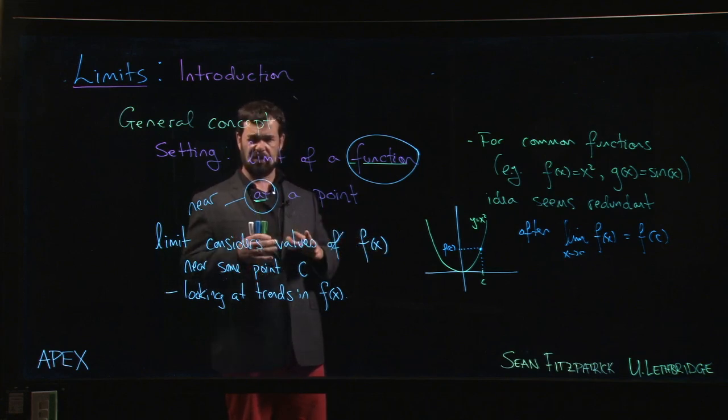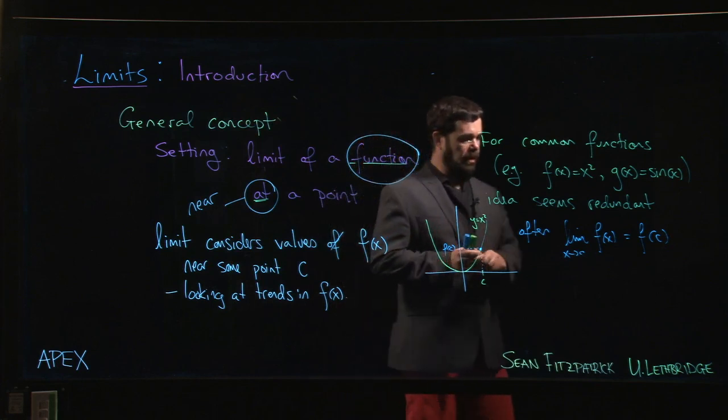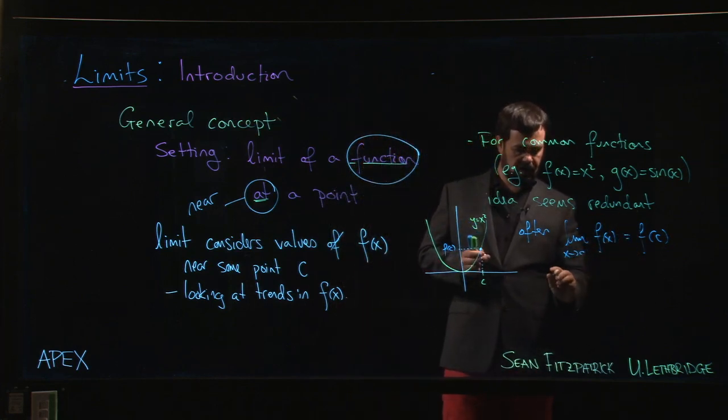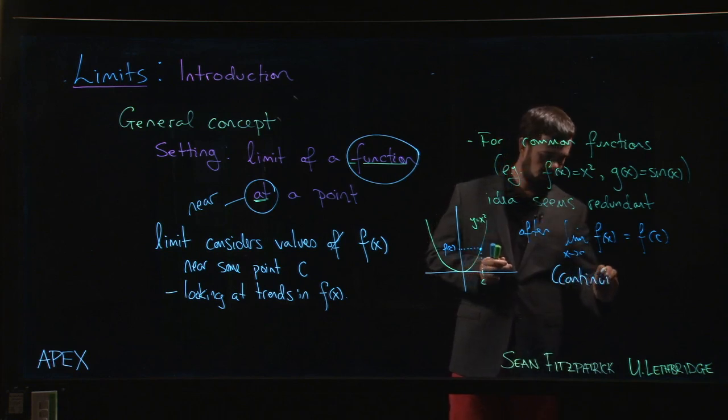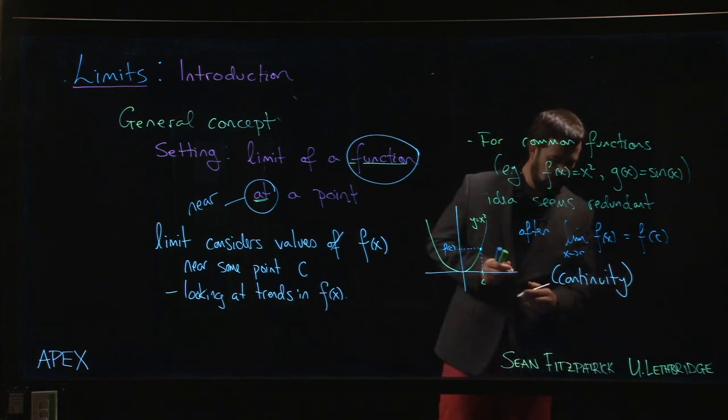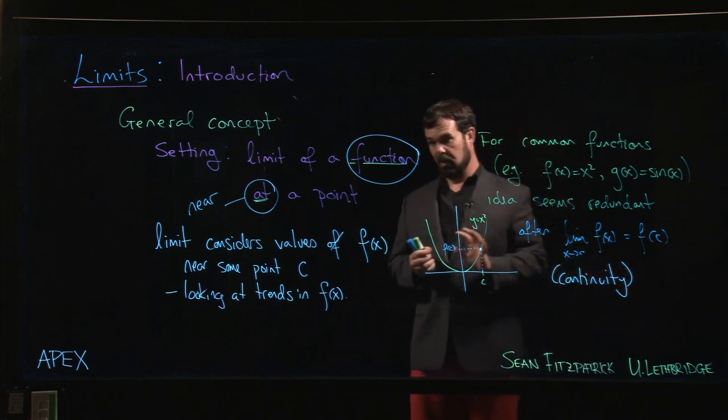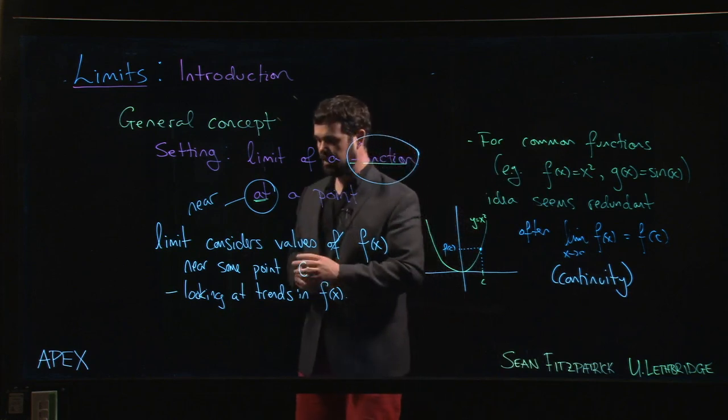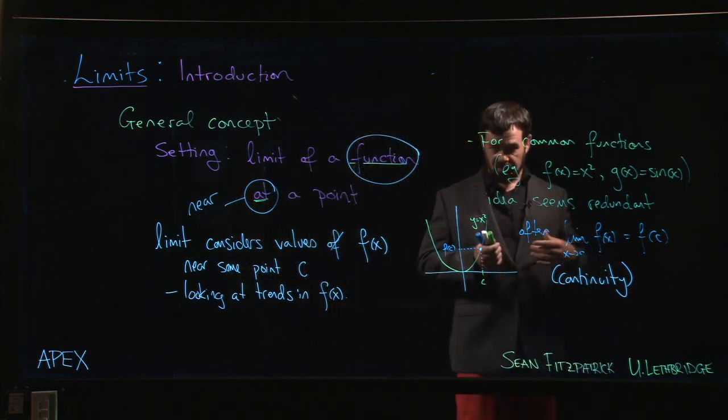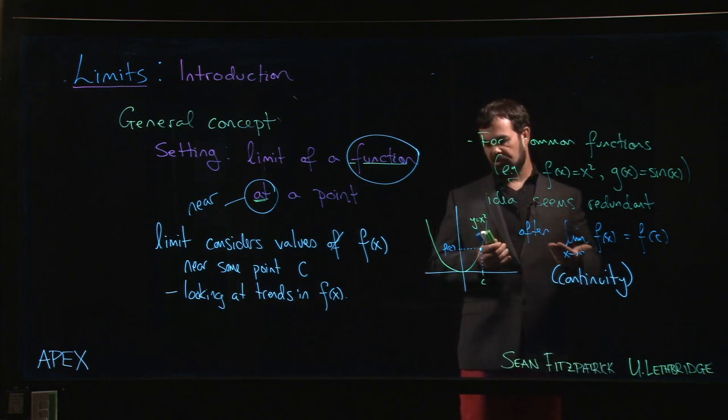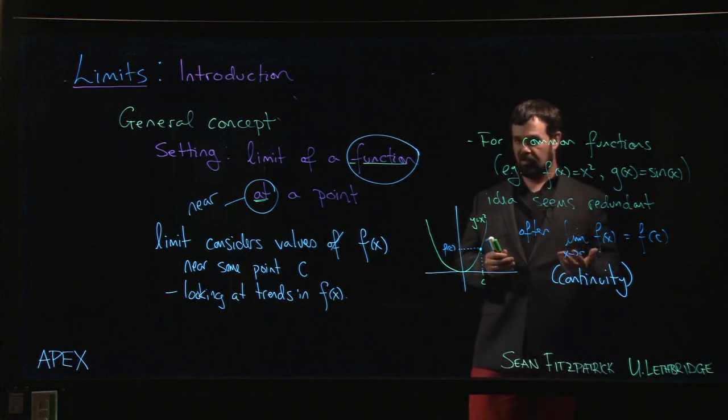This good behavior here has a name by the way. This is called continuity. And towards the end of the chapter on limits, we'll define what it actually means for a function to be continuous. And we'll see that in fact it really just means this. And then we'll start to understand that most of the functions we're used to are in fact continuous. And that's why this idea of a limit seems sort of silly at first.